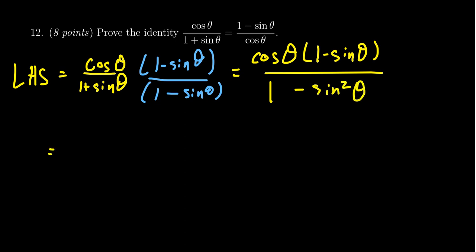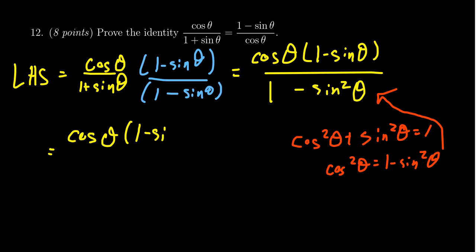The next thing we're going to get is a cosine squared by the Pythagorean equation. Remember that cosine squared plus sine squared is equal to one. So if you solve for cosine squared, you're going to get that cosine squared theta is equal to one minus sine squared. So a modification of the Pythagorean identity does come into play right here. We're using that to get that cosine theta times one minus sine theta over cosine squared.